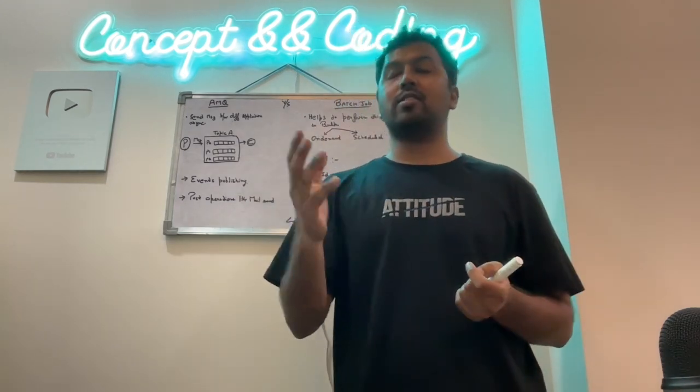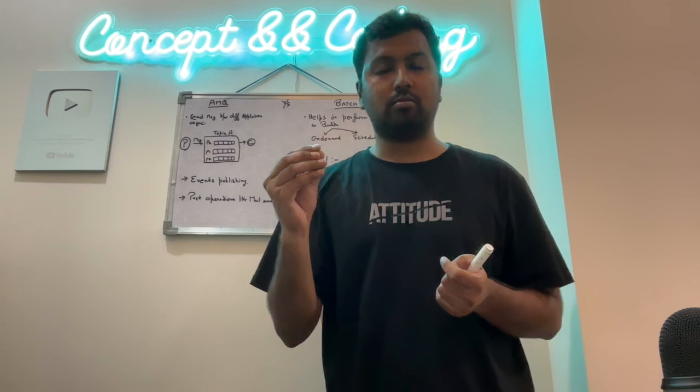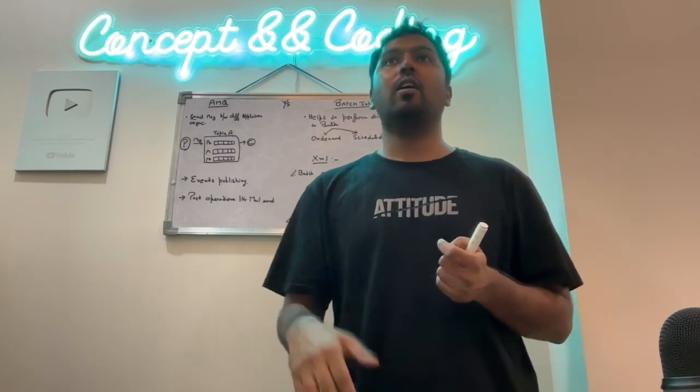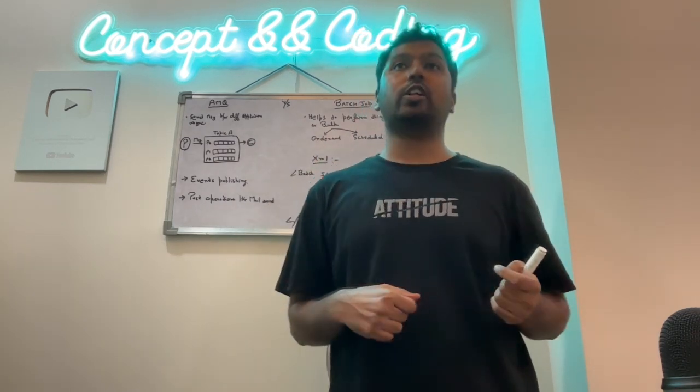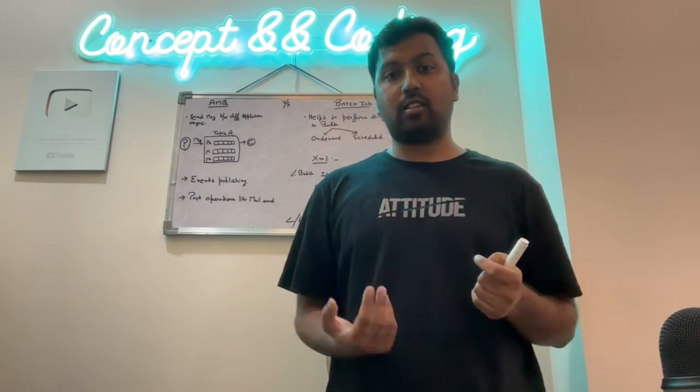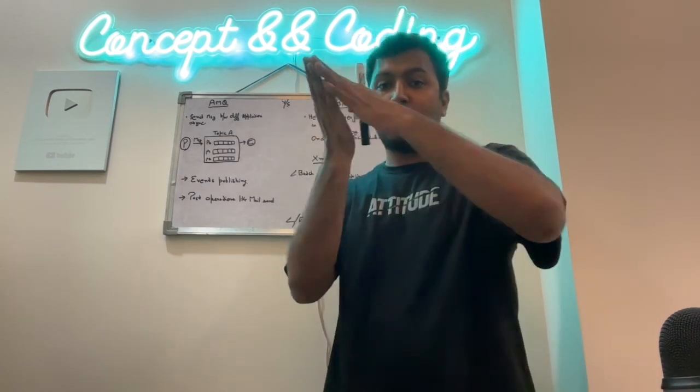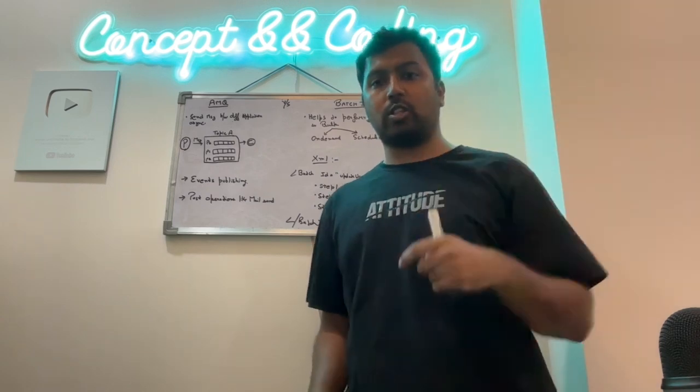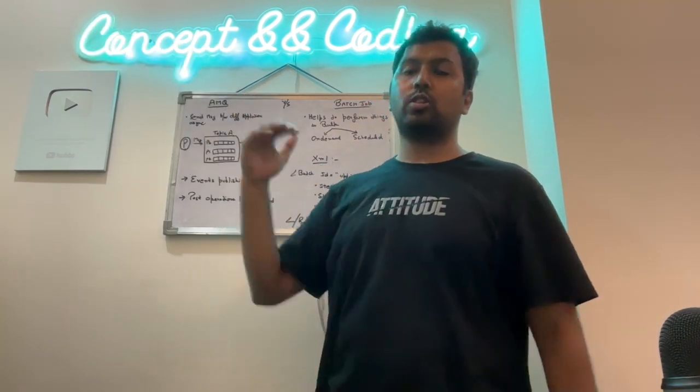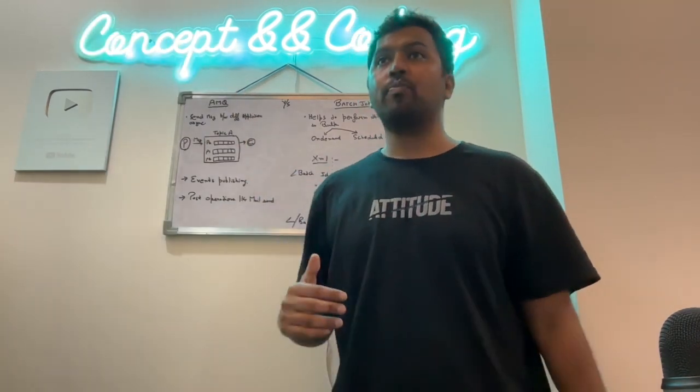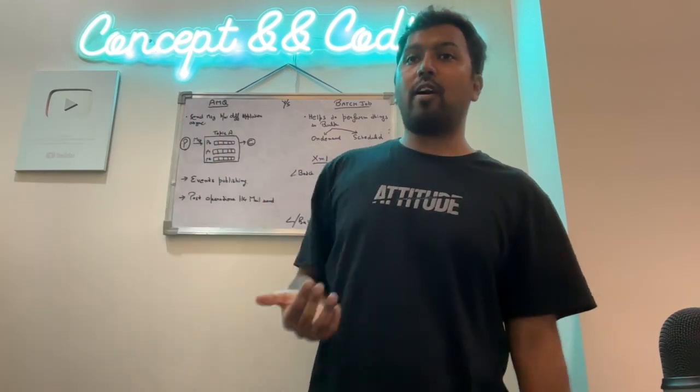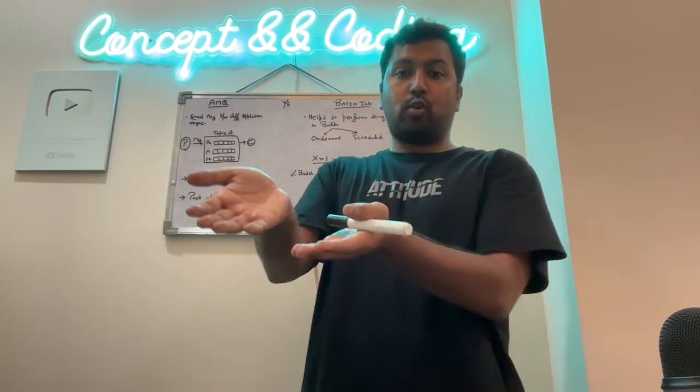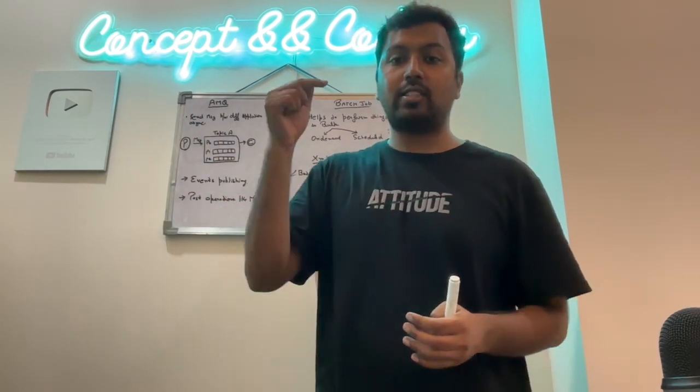So now generally on demand is used when you have to correct the DB. There is some mistake happened in the DB because of latest code changes and you have to correct the DB. Let's say you have listed down all the users, these are all the users I have to correct the DB for them. Now you take a file, feed it to your batch and then say start.